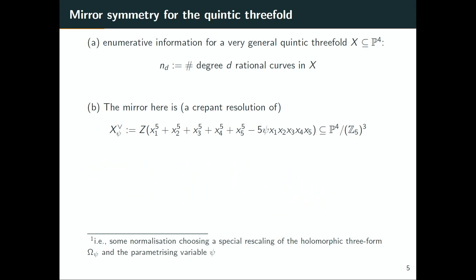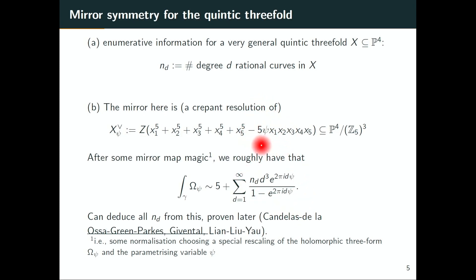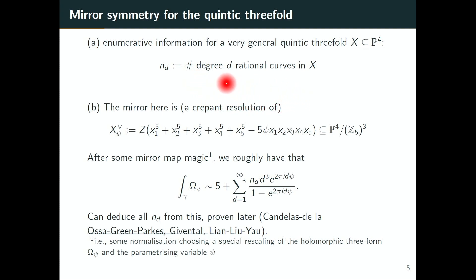The mirror is a Calabi-Yau variety. It has a unique up-to-scaling holomorphic top-degree form. You can integrate with respect to that when you look at a degeneration. You degenerate with respect to psi, and then you end up with this being the expansion with respect to psi. You end up with a generating function that will predict and let you read off the number of degree d rational curves on the very general quintic threefold. So periods and Hodge theory encode all this enumerative information of the mirror, which is a very beautiful thing. This was then proven by Lian, Liu, and Yao, as well as Givental in 1996. So quite quickly after this insight, we were able to deduce what enumerative information should exist.